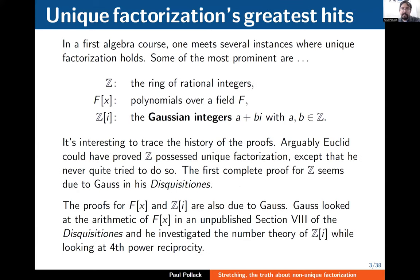In a first course in algebra, you meet many examples of UFDs. The ones most likely encountered include the ring of integers Z, the ring of polynomials over a field F — F[x] — and the ring of Gaussian integers Z[i]. Tracing the history, Euclid got quite far toward stating unique factorization but never quite did it. The first formal statement together with the first complete proof doesn't seem to come until the 19th century — with Gauss in his Disquisitiones. The proofs for F[x] and Z[i] also seem to be due to Gauss.